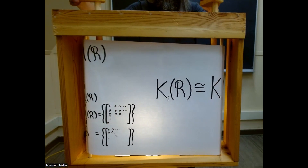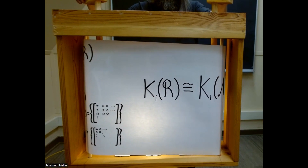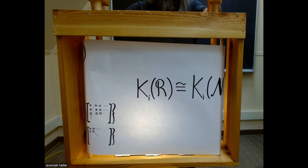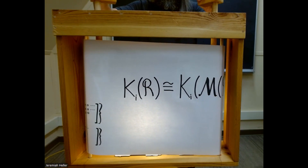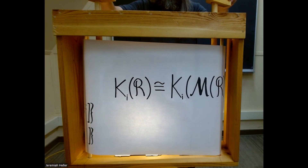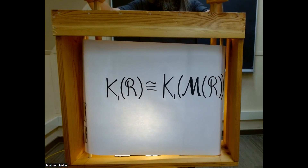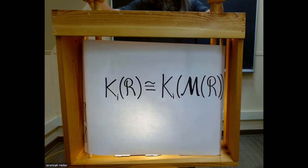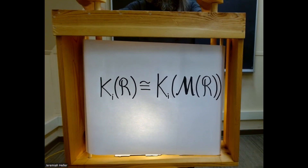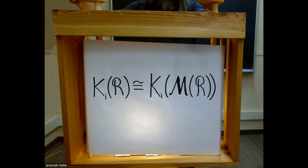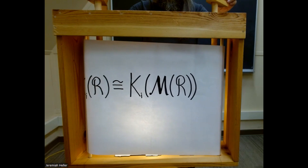Something called Morita invariance tells us that the K-theory of R is the same as the K-theory of finite matrices over R. So for K-theory purposes, there is no distinction between R and M of R.